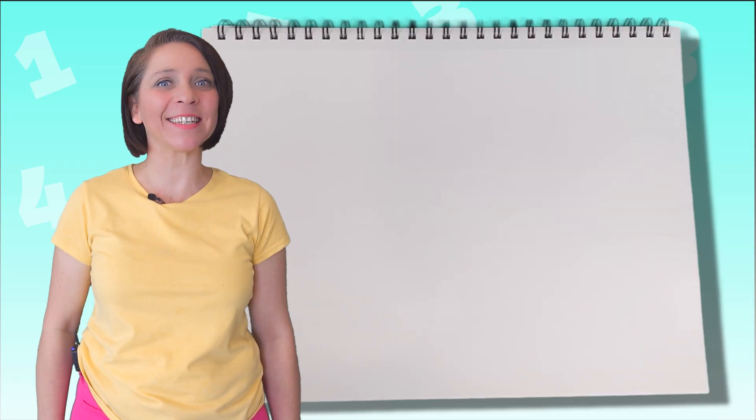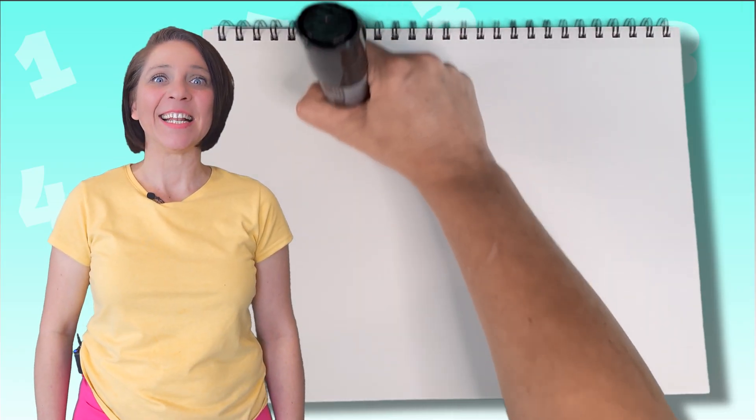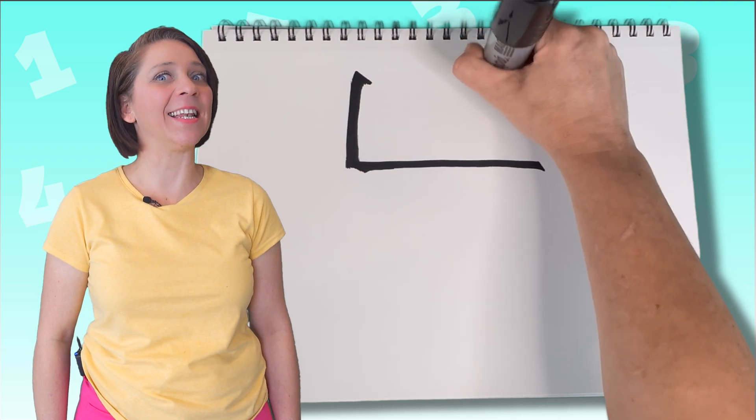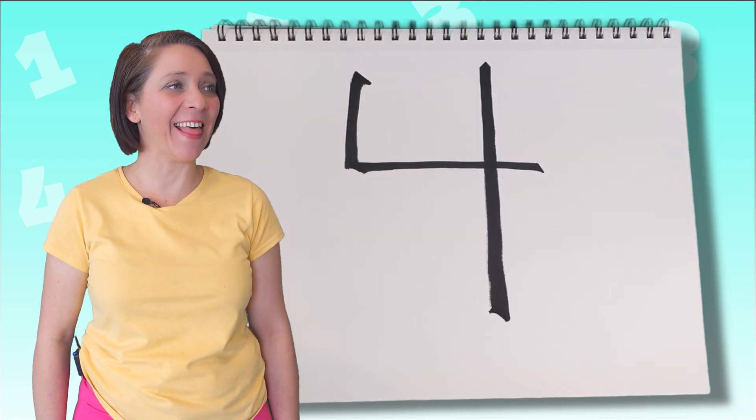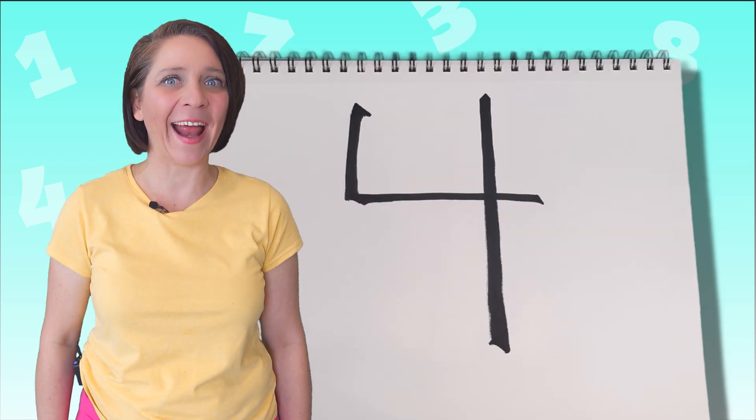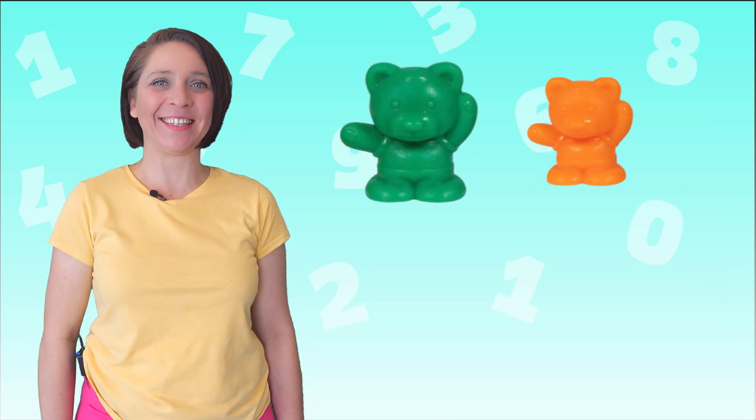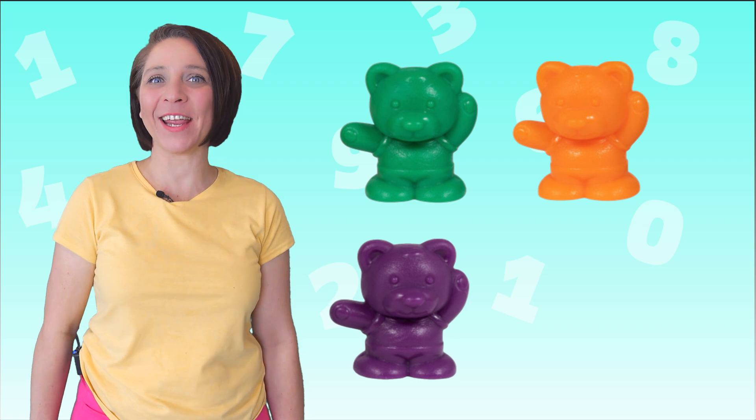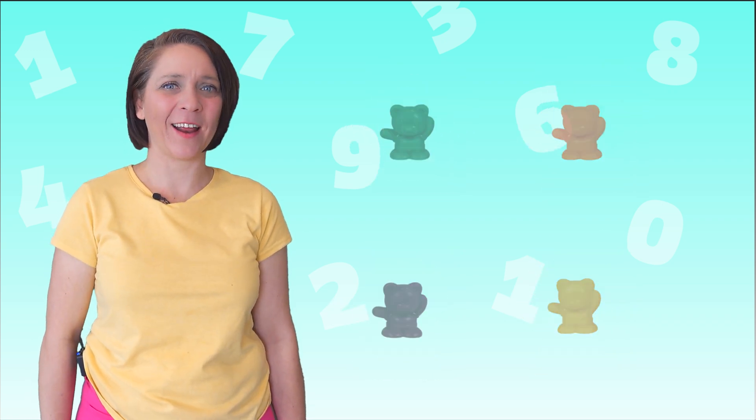Do you know what comes after number three? That's right, a four. Down and over and down some more. That's the way to make a four. Count to four. One, two, three, four. What comes next?